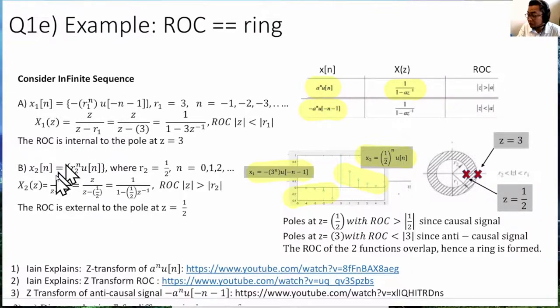X2 is the causal signal. R2 is half. So, X2 is z over z minus half. We draw the position of the two poles. For z equals to half, we draw the region of convergence that is external to him.